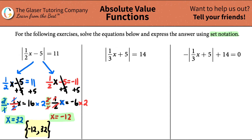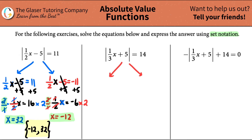One down, two more to go. Let's move on to the next one. This one says the absolute value of one-third x plus 5 equals 14. It looks like the same thing is happening — everything on the left-hand side is trapped between that absolute value, so I'm stuck. I want to solve for x, but I can break this up into two equations: one equaling positive 14 and the other equaling negative 14. So we get: one-third x plus 5 equals 14, and one-third x plus 5 equals negative 14.